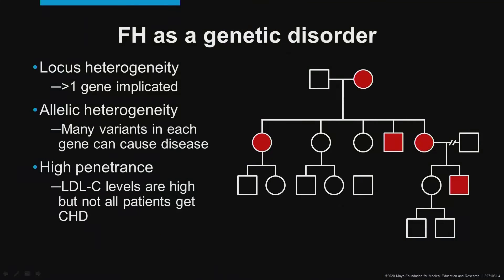Familial hypercholesterolemia is an autosomal dominant genetic disorder, as is evident from this pedigree of a family with FH. Nearly 50% of first-degree relatives are typically affected. FH shows locus heterogeneity, which means that more than one gene is implicated.